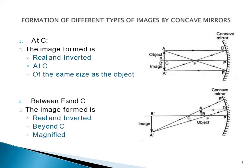The third case is when we keep the object at C. In this case, the image formed is real and inverted, the image is of the same size as that of the object, and it is formed at C.